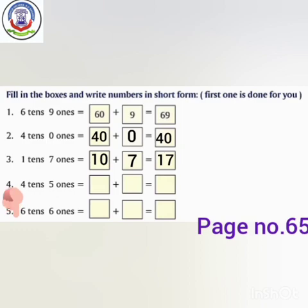Number 4 — how many 10s do we have? We have 4 tens. How many 1s do we have? We have 5 ones. We put 0 after 4 and it becomes 40. 40 plus 5 equals 45.